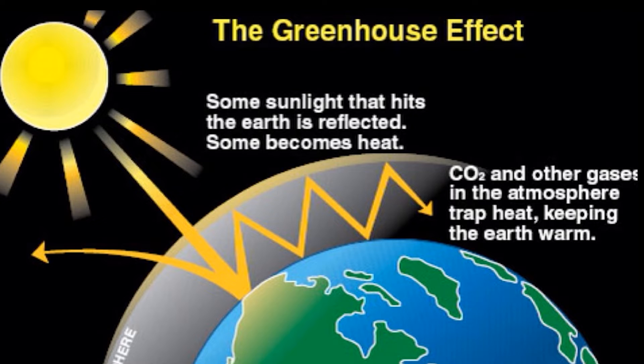When too much carbon dioxide is released into the atmosphere, it will form a thick layer and trap the heat from the sun. So much heat is being kept inside the greenhouse earth that the temperature of the earth is going up faster than any previous time in history.